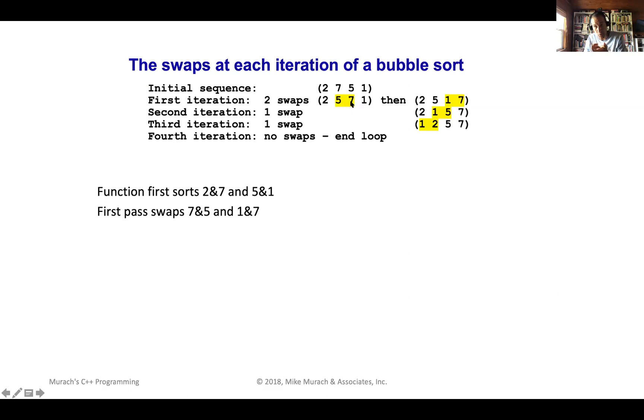Okay, now that I've swapped five and seven and five becomes five and seven. Now that I've swapped those is seven smaller than one. Nope. Okay, swap those. So now we end up after the first iteration through the loop, we've got two, five, one, and seven. Now we're going to start back from the beginning.